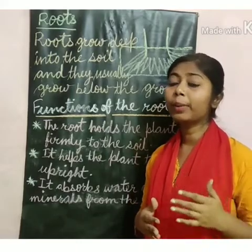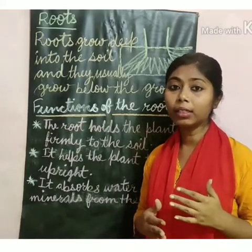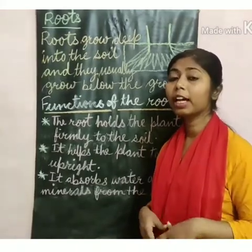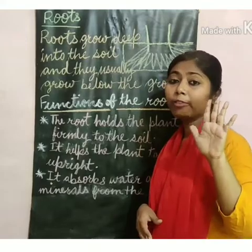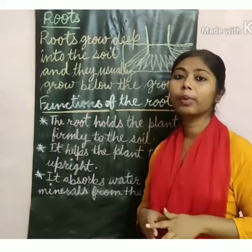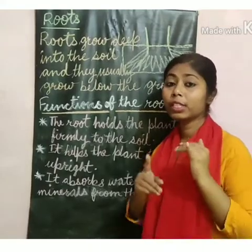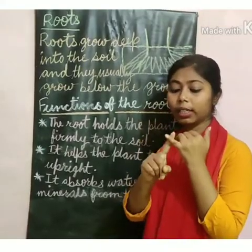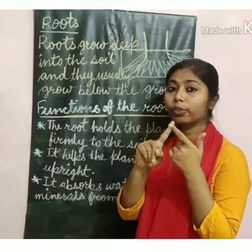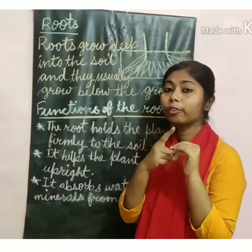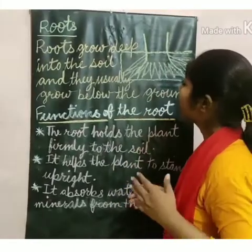How many parts does a plant have? There are five main parts of a plant: seed, stem, root, fruit, and flowers.